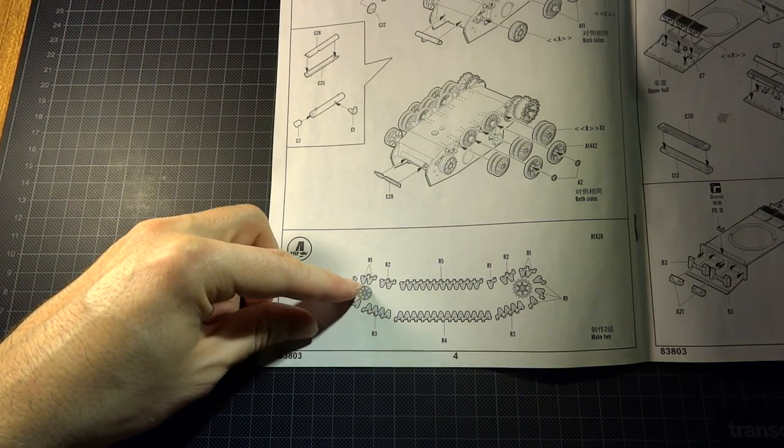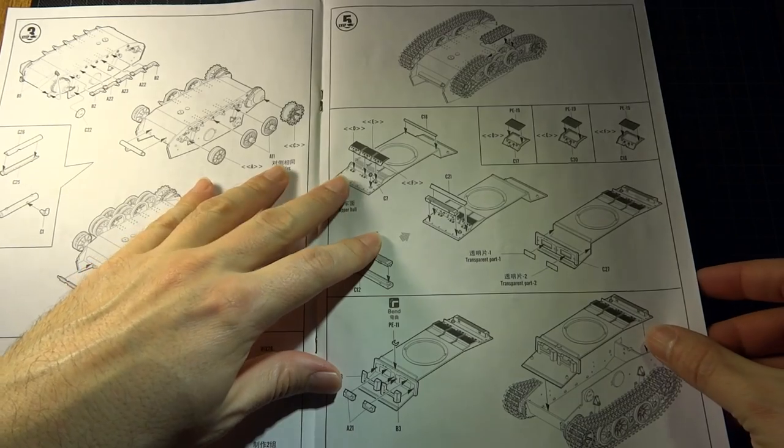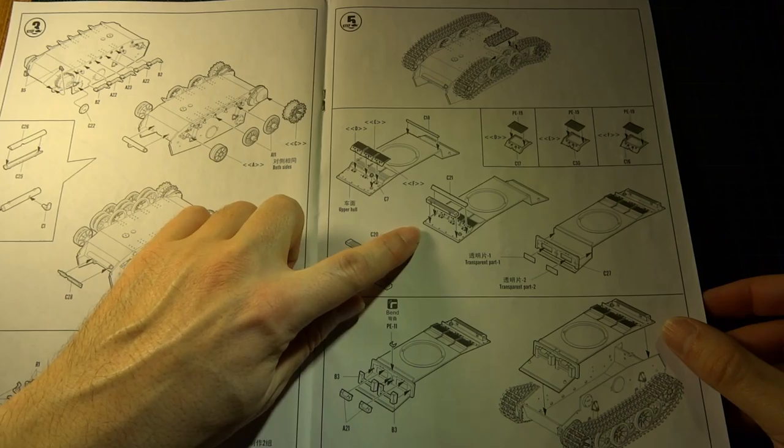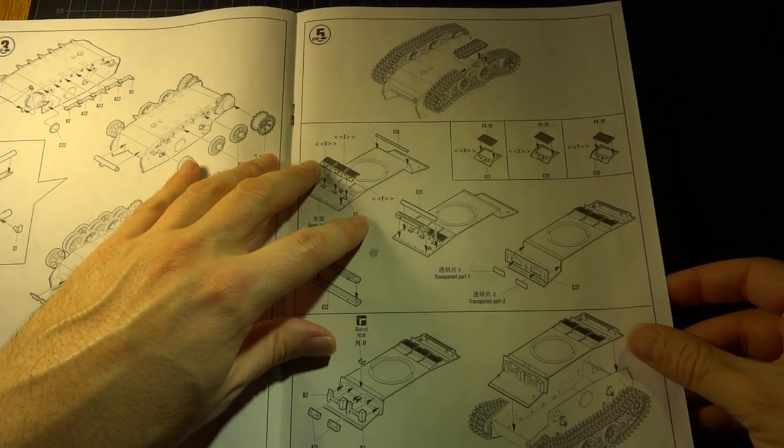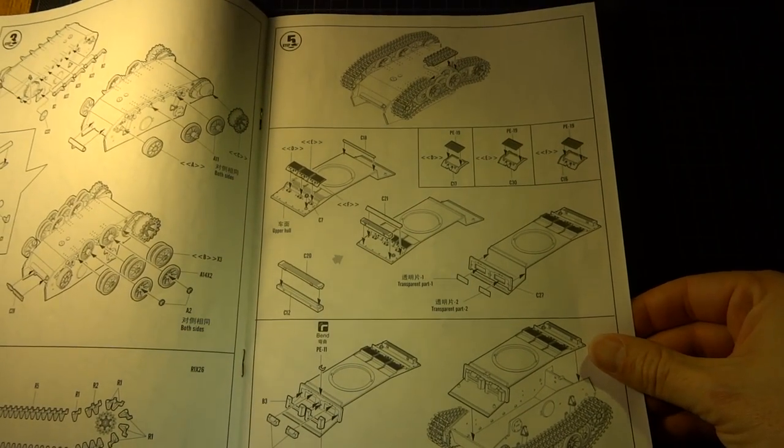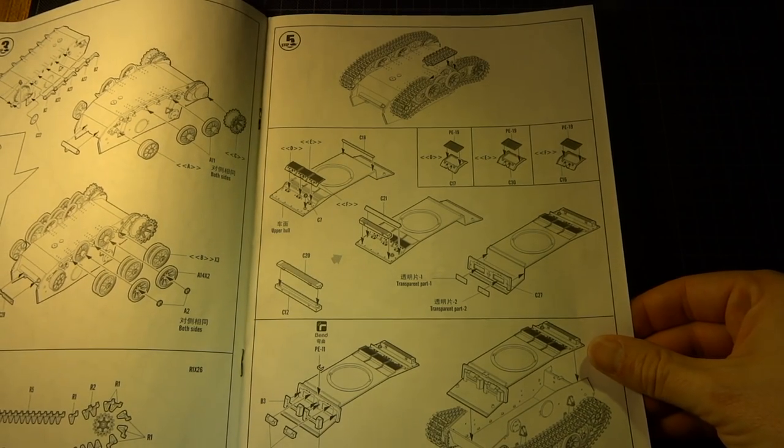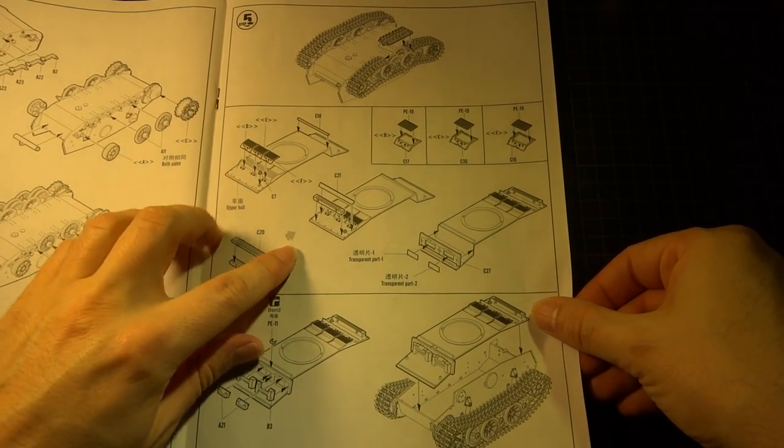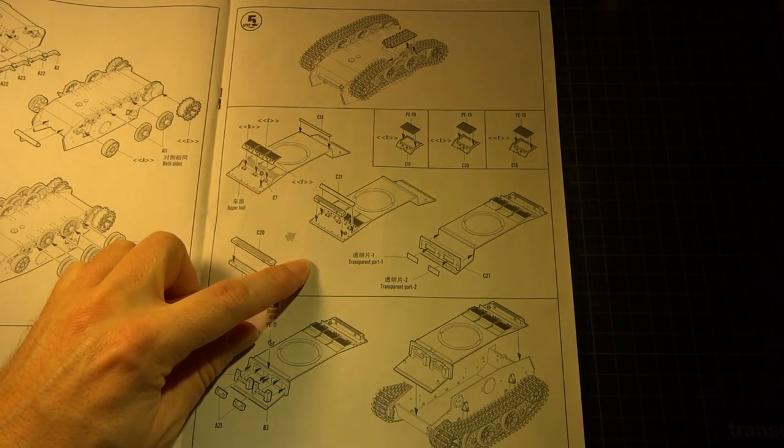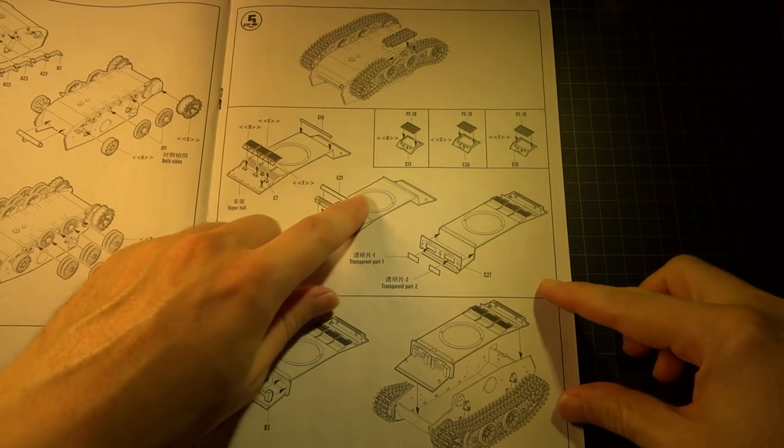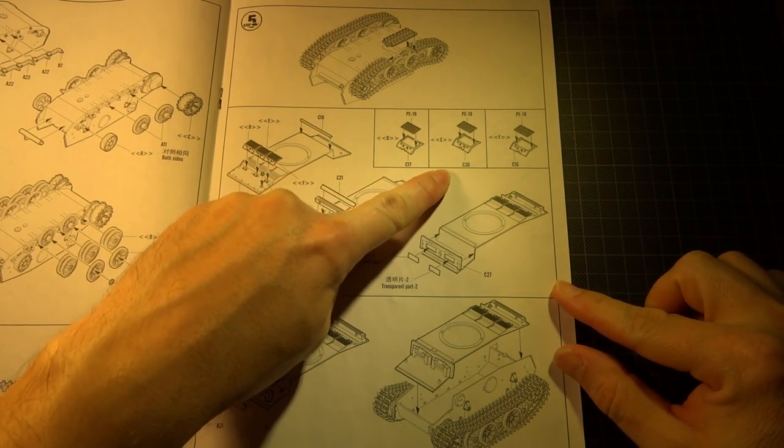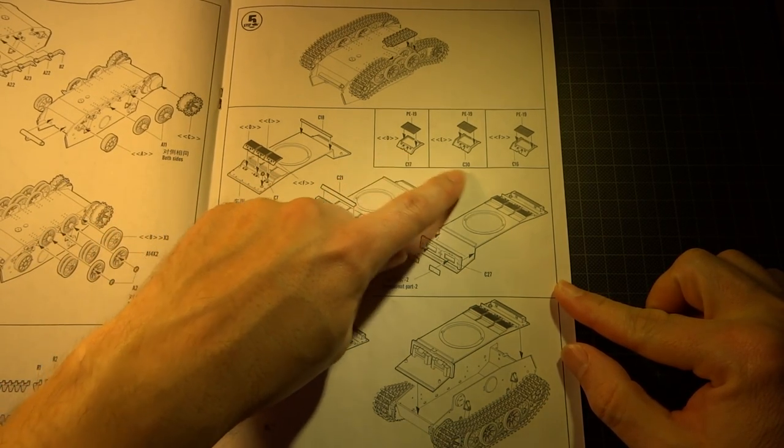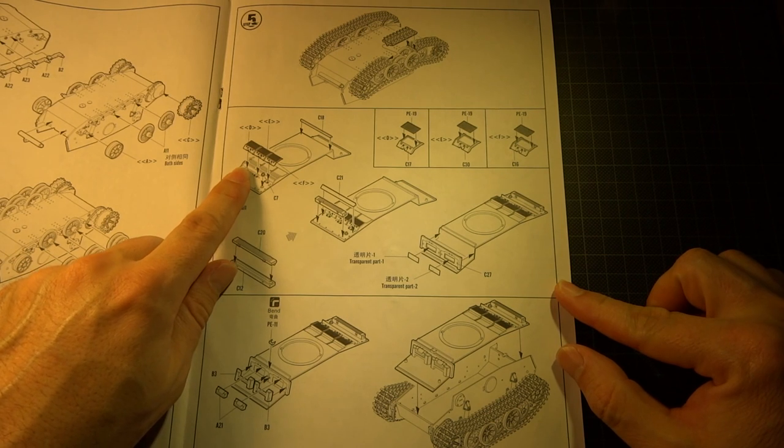The rear panel has some photo etch parts. It's showing in detail, in a very detailed manner for these photo etch parts. It's good - some kits do not show them in detail. There are three parts going together here on the upper hull.